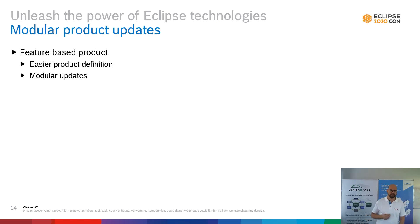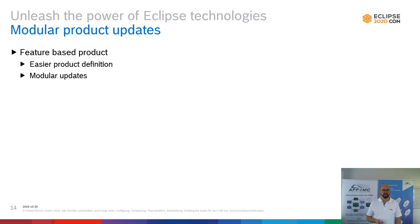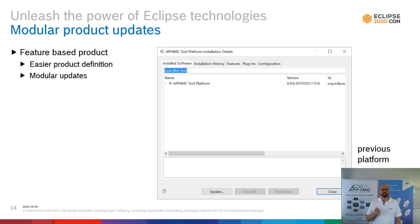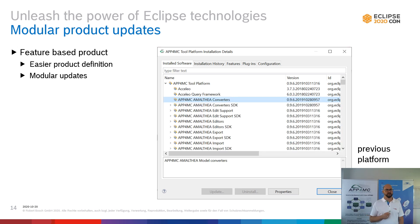Let's start with modular product updates. When I came into the project the idea was to modularize the code base to have modules that can be built and delivered to users, like the migration component for example. We're using a feature-based product — it makes the product definition easier and should provide modular updates — but when we tried to actually execute a modular update we found out it does not work because our product definition had one root feature, App4MC Tool Platform, and everything else was below that root feature. As you can see, the Update and Uninstall buttons were disabled, so it was not possible to do a modular update.